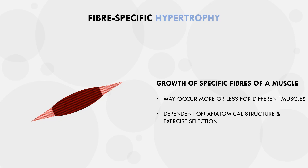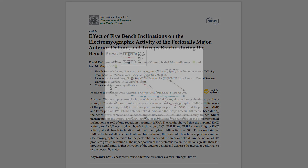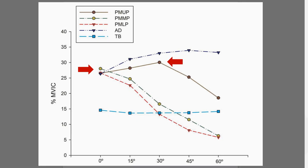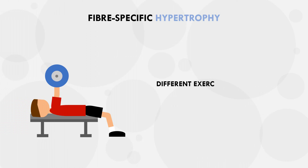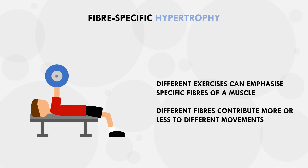For example, one study explored the effects of different bench press inclination angles on pec muscle activation. The upper pec muscle fibers were most active with around a 30-degree incline angle, while the mid and lower pec fibers were most active with the flat bench press. While this isn't a direct measure of muscle hypertrophy, it suggests that specific fibers of a muscle like the pec major are activated more or less with different exercise variations. This is likely because the upper, middle, and lower pec fibers all run at different angles and therefore contribute to slightly different movements.